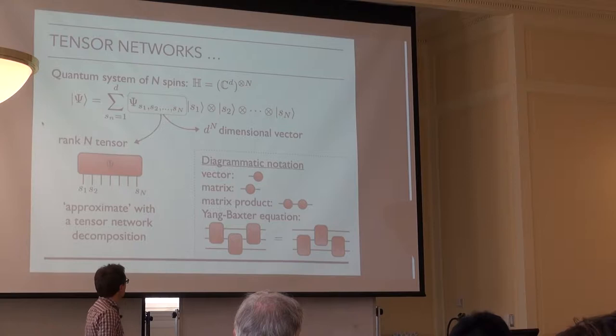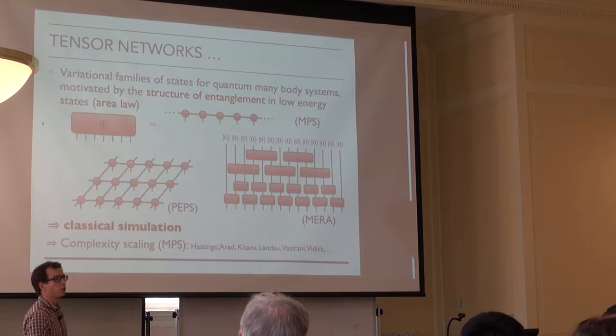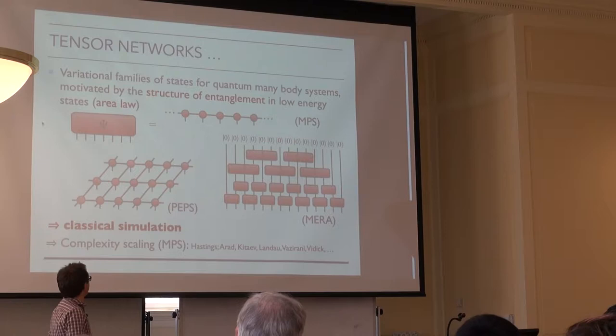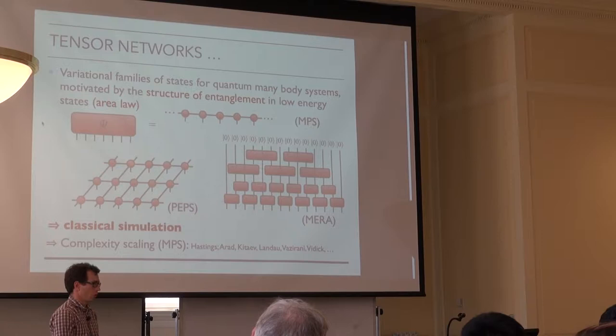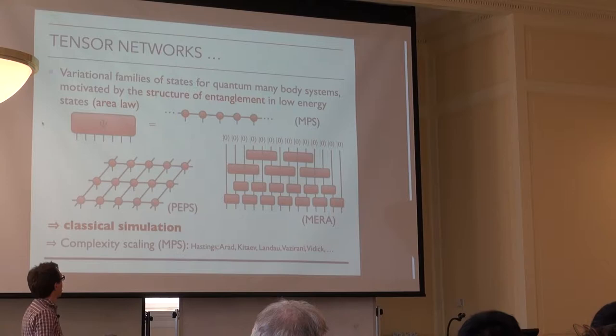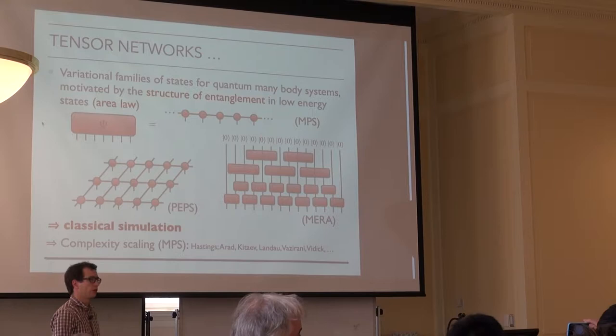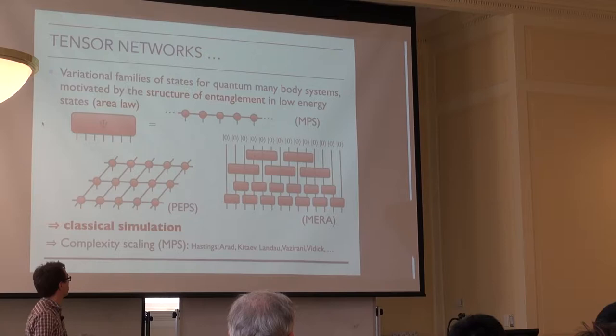We try to find a decomposition of this high-rank tensor representing a quantum many-body state into tensors of lower rank, providing a more efficient description. This is used as a variational ansatz — these are different variational families that don't capture all states in the Hilbert space, but they are very good ansätze for low energy states of local Hamiltonians. This is motivated by the area law of entanglement entropy.